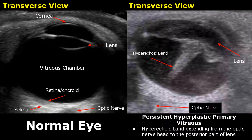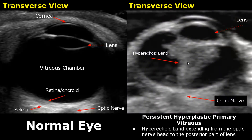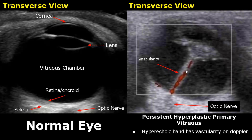Persistent hyperplastic primary vitreous is a condition in which a hyperechoic band is seen extending from the optic nerve head to the posterior part of the lens — one end attached to the optic nerve head and the other end attached to the back of the lens. Here is another case where the hyperechoic band is thicker. On Doppler, this hyperechoic band will show vascularity with blood flow inside.